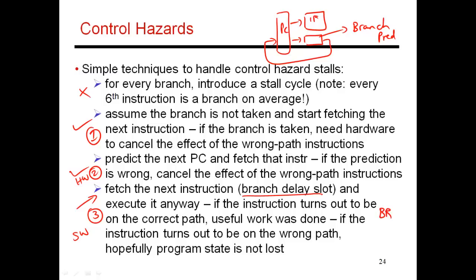The branch delay slot says that after a branch, there's a high likelihood the next cycle might be wasted. So instead, we mandate that the instruction after the branch is always fetched and executed, and it is up to the compiler to put something useful into that slot. This is not a hardware-intensive solution because I'm not introducing additional logic to cancel out miss-fetched instructions. I'll always assume the instruction after the branch is fetched and executed to completion. By the end of the second cycle I know what instruction to fetch, redirect fetch if necessary, and start fetching correct instructions from the subsequent instruction on. This slot is called the branch delay slot.